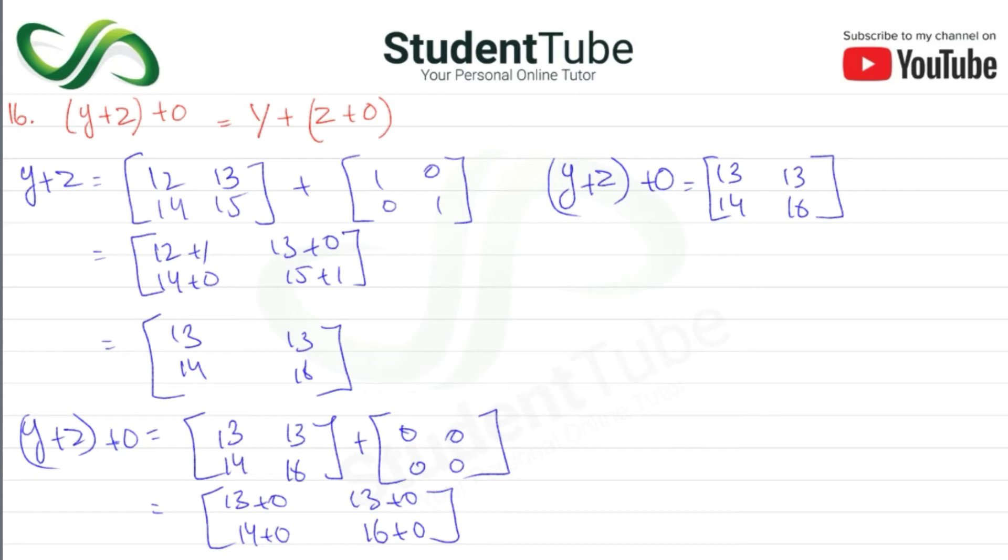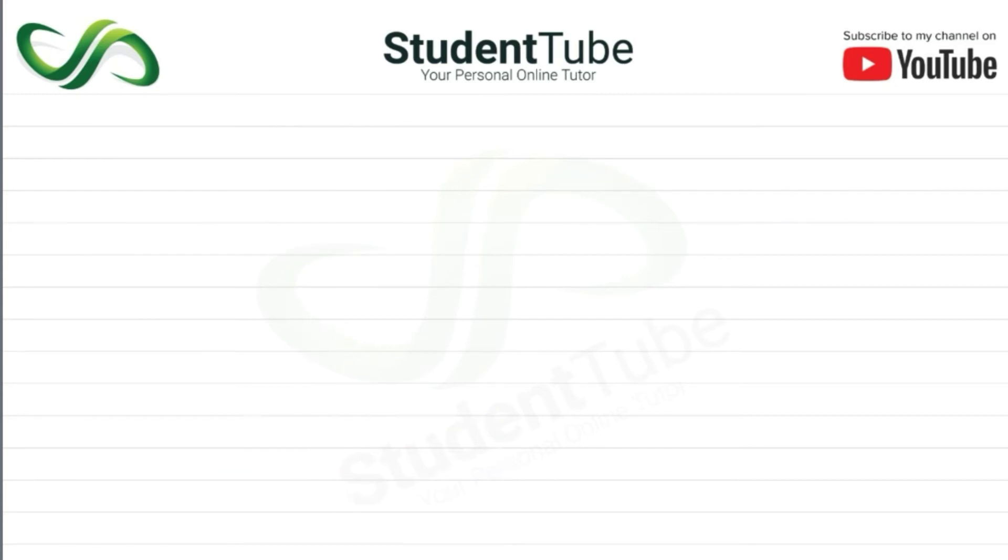Okay, now the other one should also be here, so this means that the two equal are approved. Now we calculate Z + O. First we have to find Z + O.